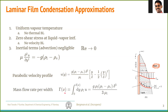Once we obtain the velocity, we can also obtain the mass flux. Mass flux is per unit width of the plate. The mass flux is simply rho times u times dy integrated from zero to delta, since we are considering per unit width. Substituting the expression for u, we get that the mass flux depends on delta as delta cubed. We will use this expression in the next slide.